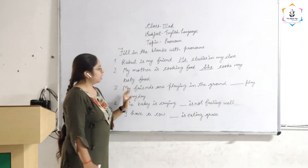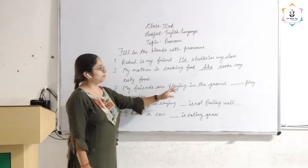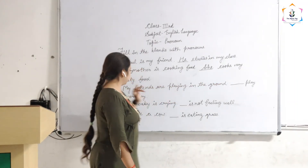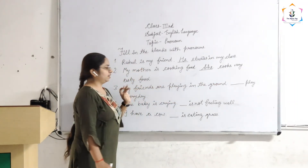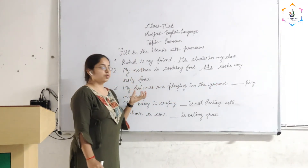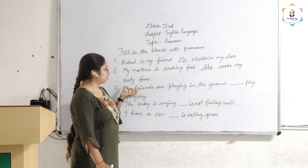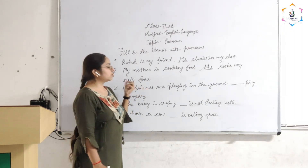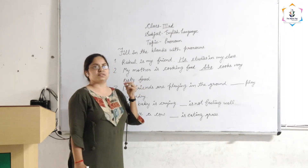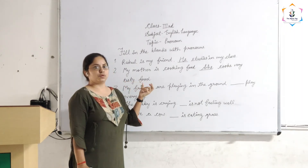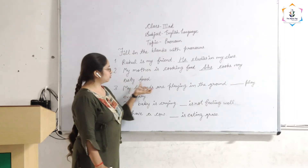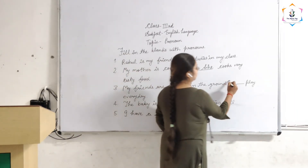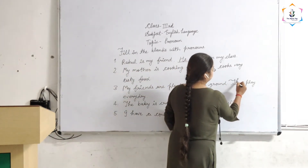The next one is: 'My friends are playing in the ground. ___ play every day.' The noun here is 'my friends', which is the plural form of persons. For the plural form of persons we use 'they'.